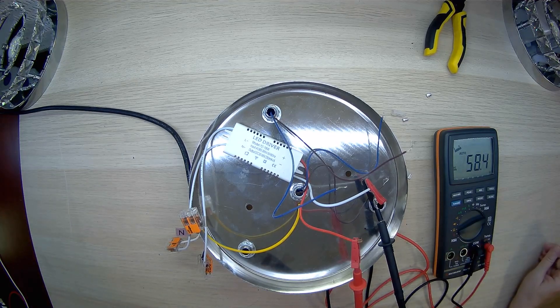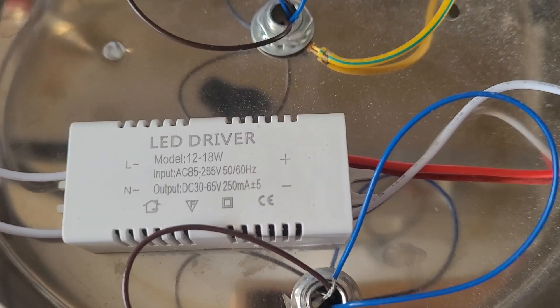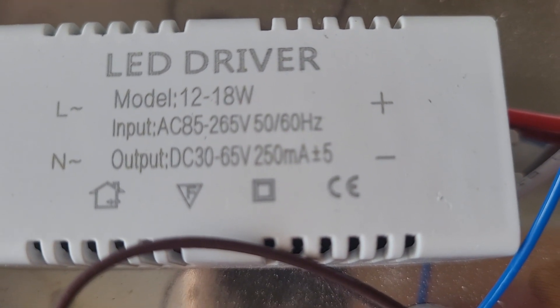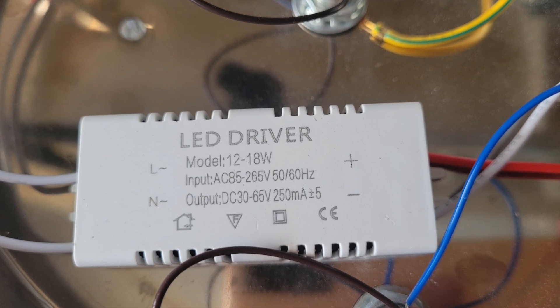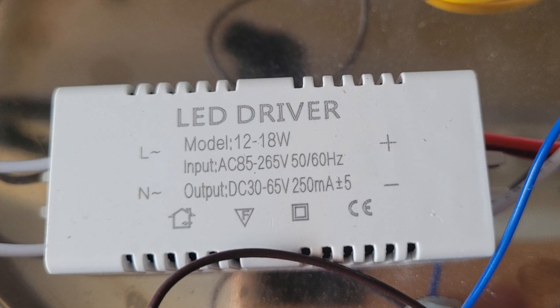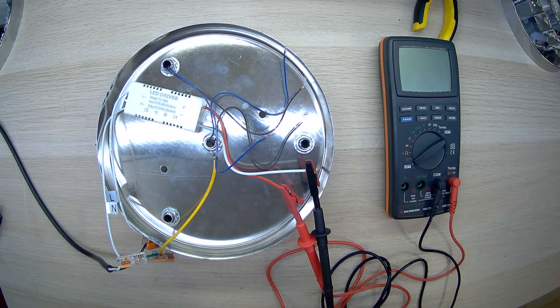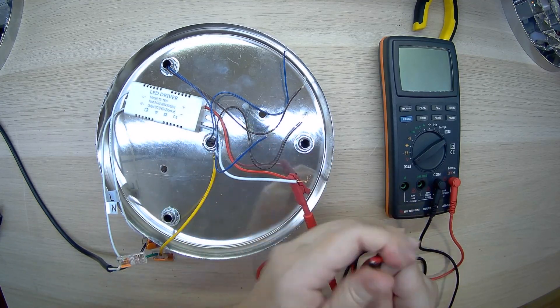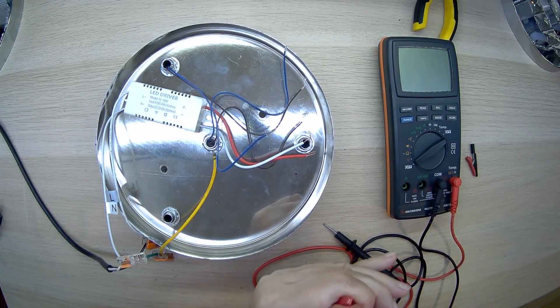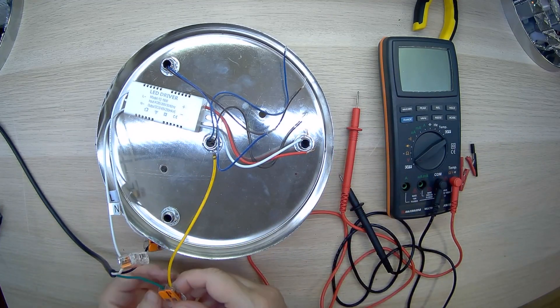We remember the driver parameters: current 250 milliamps and voltage from 30 to 65 volts. We will need this information in further analysis of the circuit. We know that the sections are connected in series. Now we need to understand how the LEDs in these sections are connected.